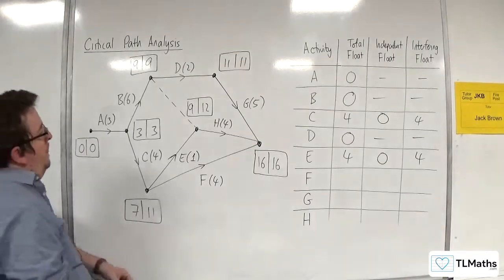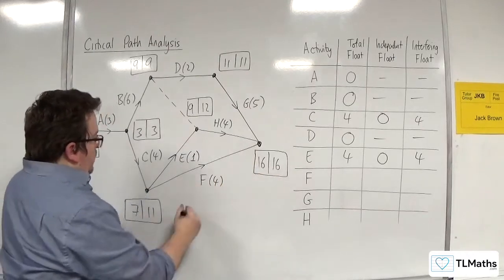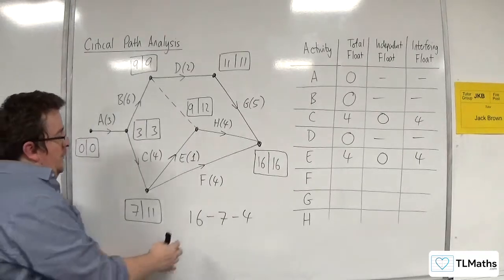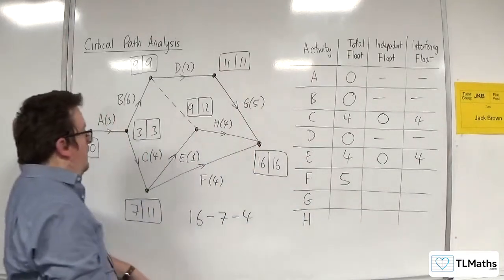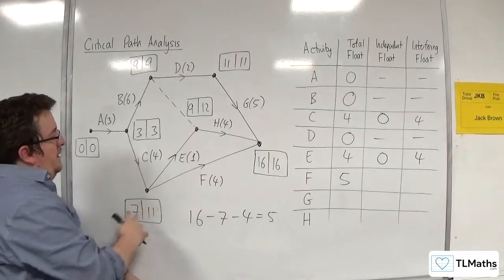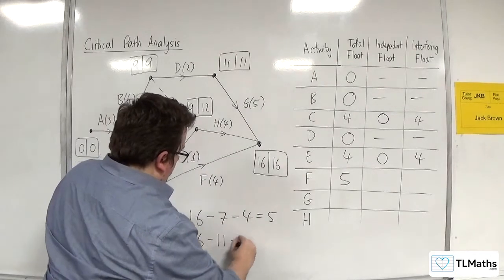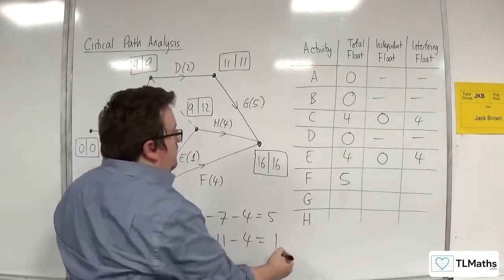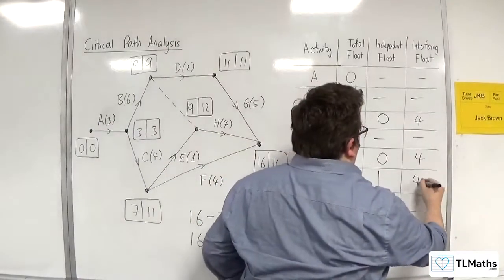How about F? F is not critical. We've got 16 take away 7, take away 4 for the total float. So 16 take away 7 is 9, take away 4 is 5 — that's the total float. For the independent float, the inner one: 16 take away 11, take away 4. So 16 take away 11 is 5, take away 4 is 1. So the independent float is 1. And the interfering float is 5 take away 1, which is 4.